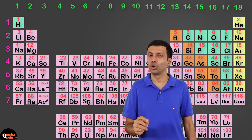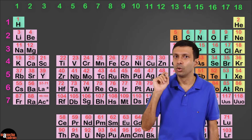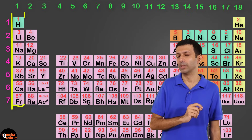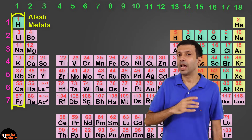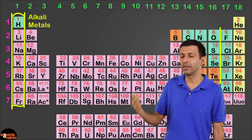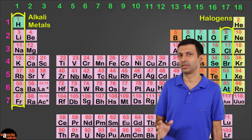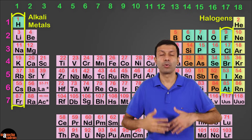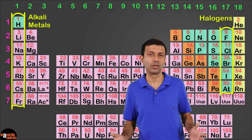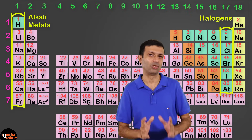Why? Because hydrogen shows properties similar to both group 1 elements, that is alkali metals, and also group 17 elements, that is halogens. Since it shows properties of both these groups, it's given special treatment.